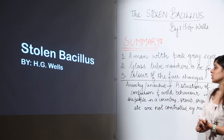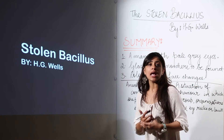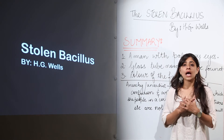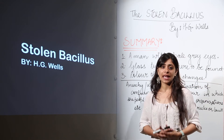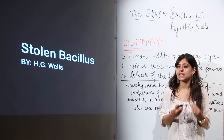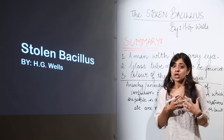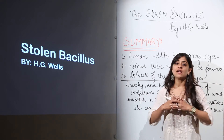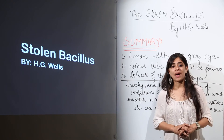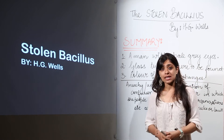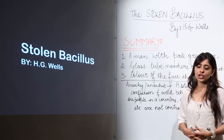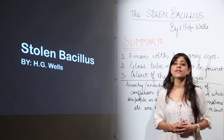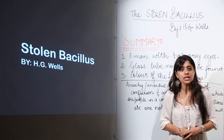As soon as the bacteriologist reaches the town and the anarchist — travelling in a cab — moves out, he sees that the test tube is broken. To show himself as a martyr, the man himself consumes the rest of the bacillus. In return, what the bacteriologist sees creates a twist in the story, which we will understand after looking at the summary.